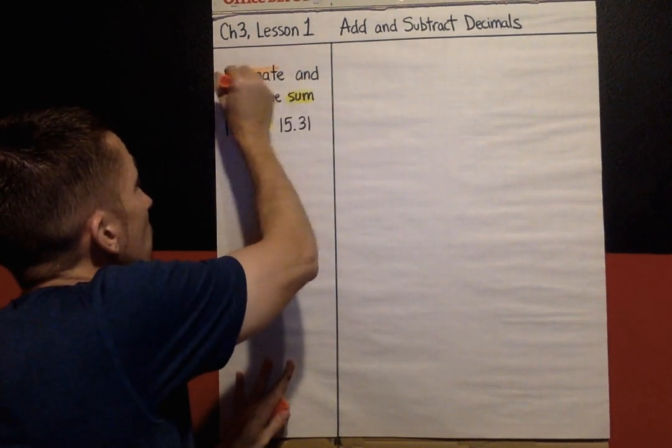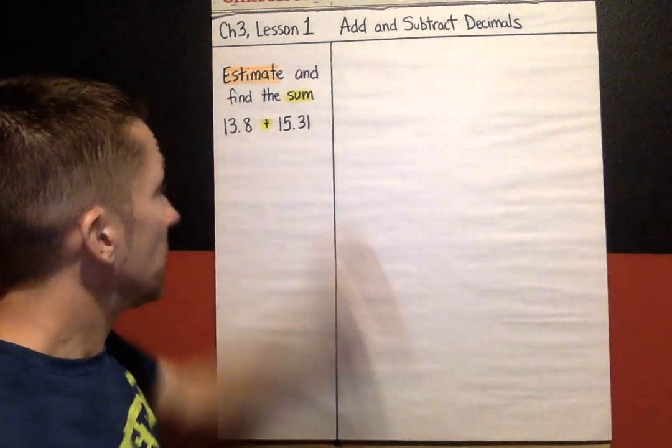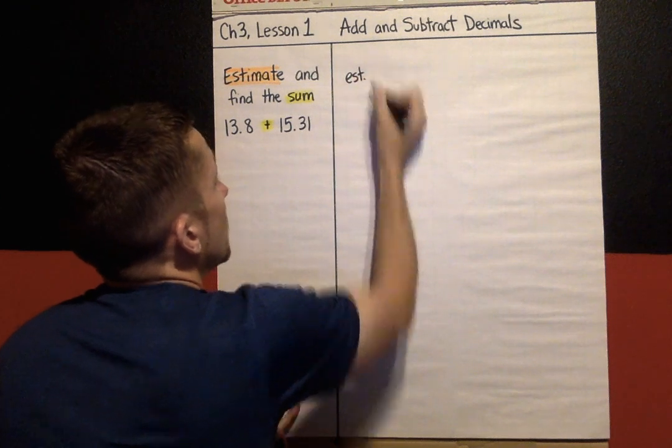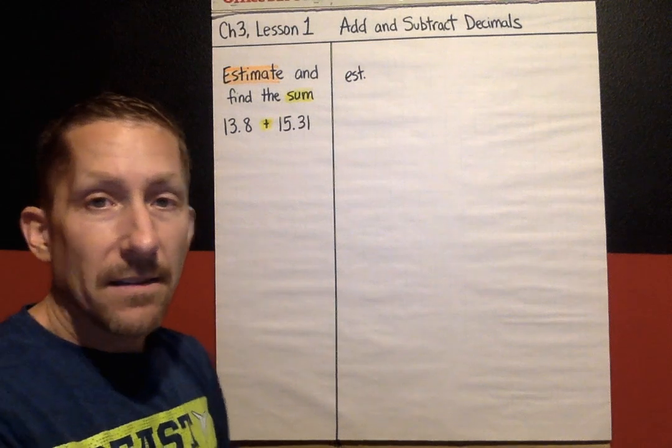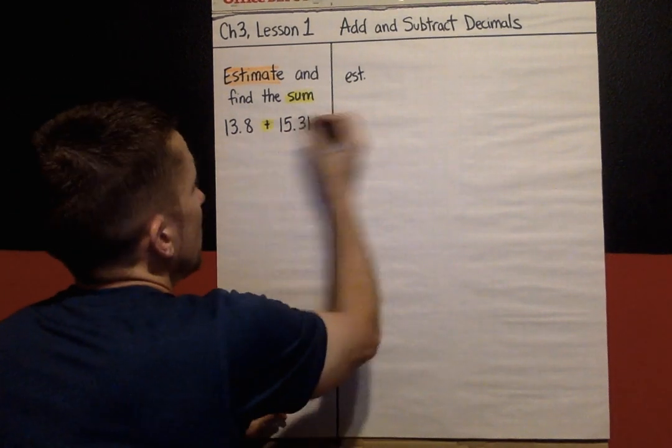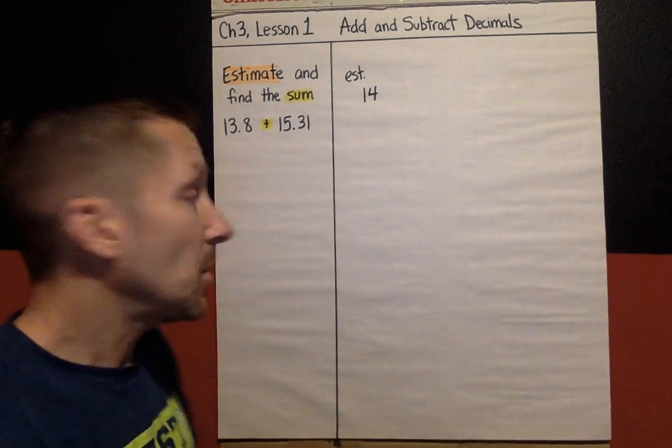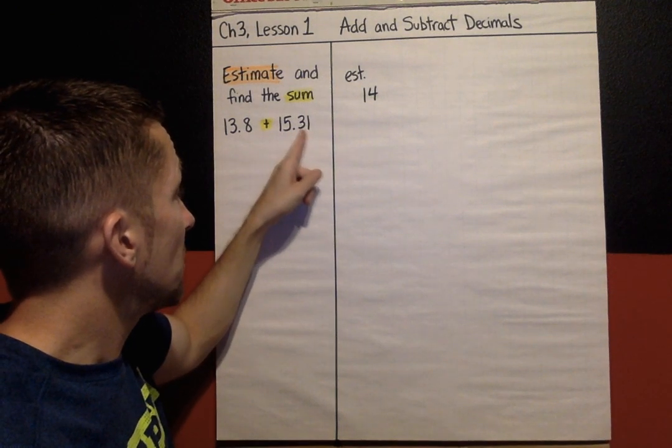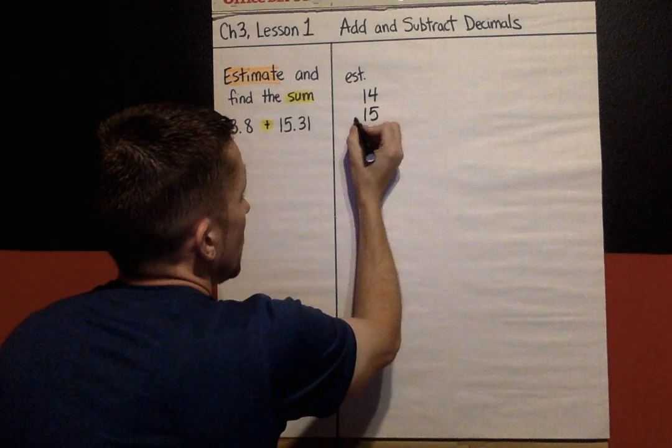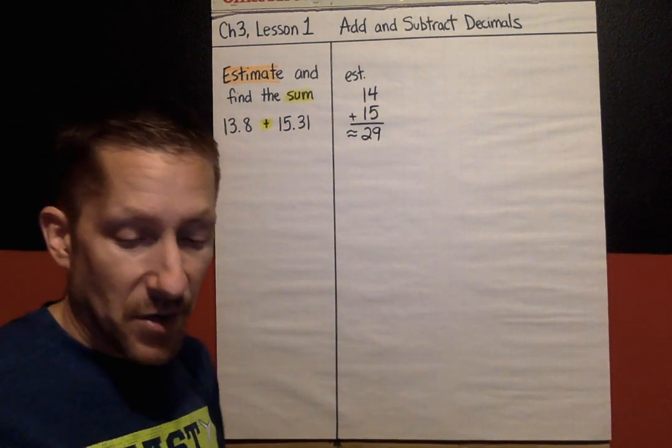So estimate, how are we going to estimate? We are going to estimate by rounding 13.8 and 15.31 to the nearest whole number. I'm going to abbreviate, estimate, and I'm going to look at 13.8 and that is closest to 14 because 8 is closer to 14. So my estimate, I'm going to make that 14 and 15.31, the closest whole number to 15.31 is 15 because the next digit is a 3. So it's closer to 15 than it is 16. So my quick estimate would be 14 plus 15 and I add that and I get about 29. So my answer should be about 29.